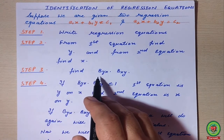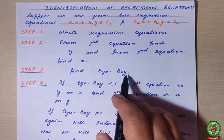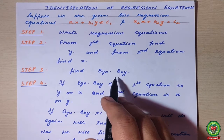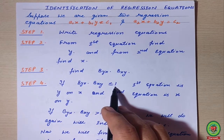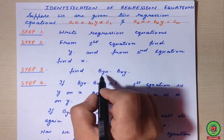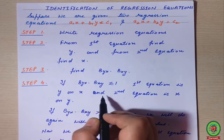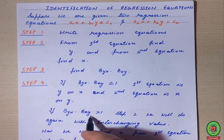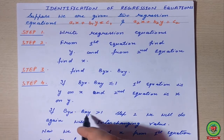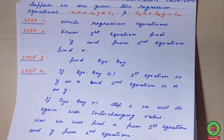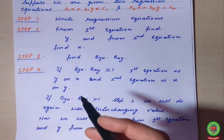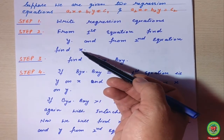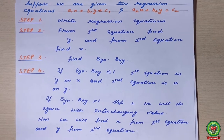Step number three: we will identify what is byx and what is bxy. Step number four: if the multiplication of the regression coefficients is less than or equal to one, then the first equation is y on x and the second equation is x on y. If the product of byx and bxy is greater than one, then we follow step two again but interchange — where we found y, now find x, and where we found x, now find y.